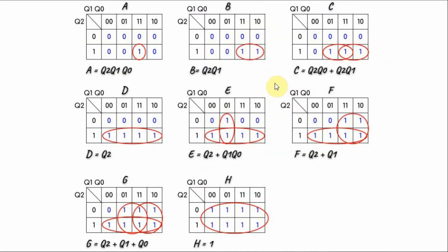From the truth table and using Karnaugh mapping, we obtain the Boolean expressions for all of the outputs from A to H.